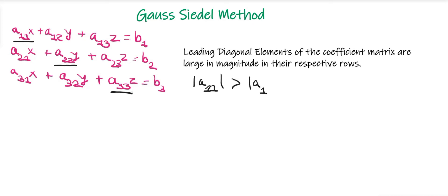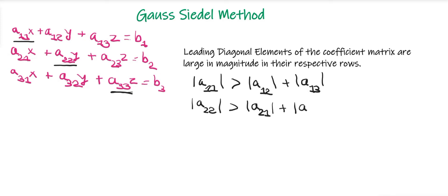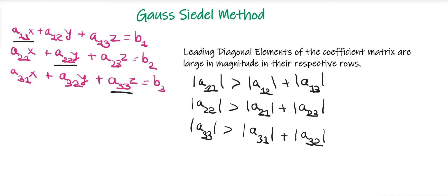For the first row, a11 must be greater than a12 and a13. For the second row, a22 must be greater than a21 and a23. And for the third row, a33 must be greater than a31 and a32. That is, the leading diagonal elements of the coefficient matrix must be largest in magnitude in their respective rows.